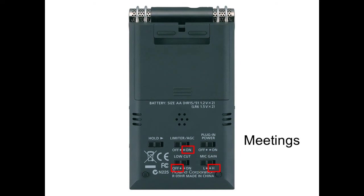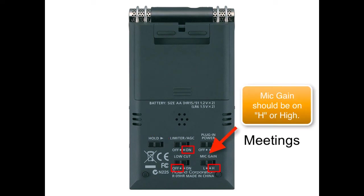Next, for meetings, you'd probably want to have the limiter/AGC turned on to level out the voice volume of all the people in the meeting. And if the recording is indoors, the low cut can be turned off. In most meeting settings with more than two or three people, the mic gain should be turned on in order to pick up everyone's voices.